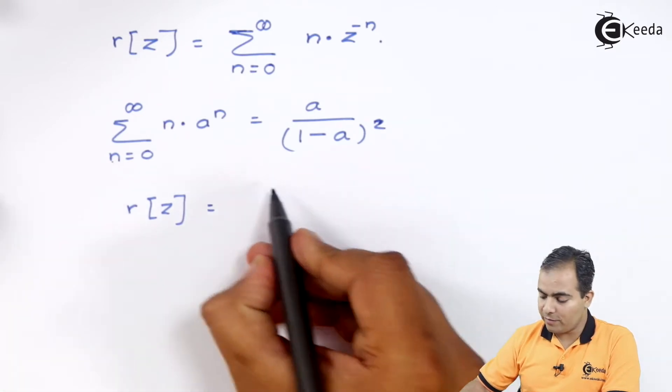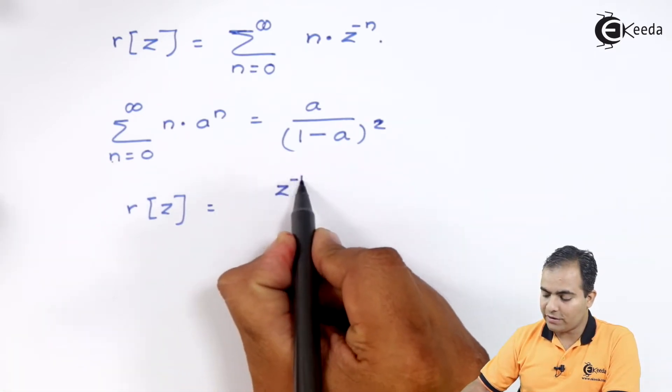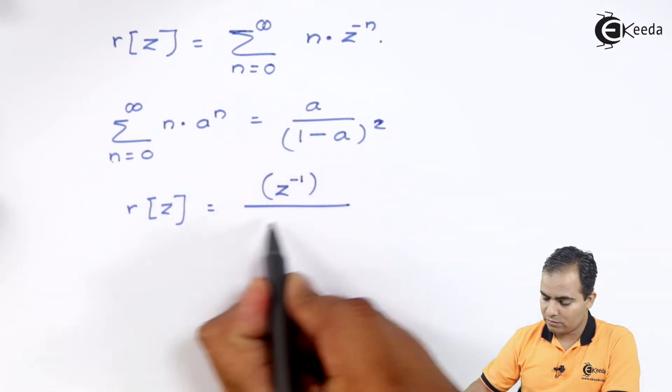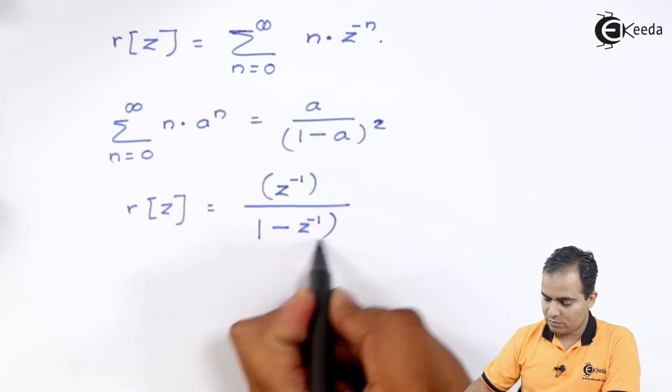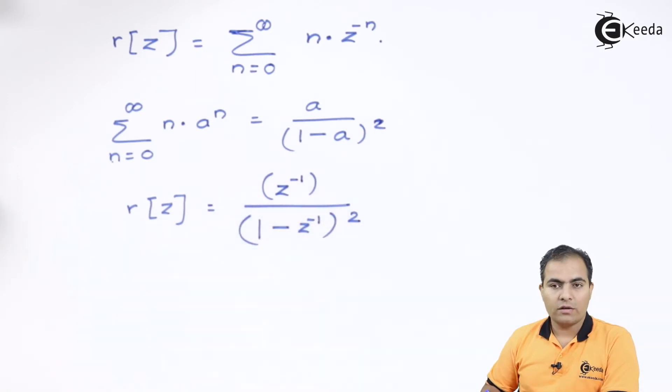So, z transform of ramp wave will be z to the power minus 1 upon 1 minus z to the power minus 1 the whole square.